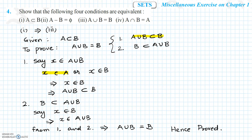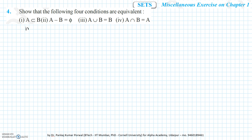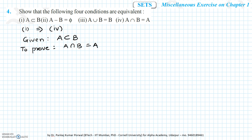Next I will prove the first condition implies the fourth. Here we are given that A is a subset of B and we want to prove A intersection B equals A. Same as the previous case, because we want to prove two sets are equal, we have to prove two cases: first, A intersection B is a subset of A, and second, A is a subset of A intersection B.